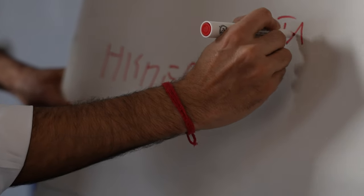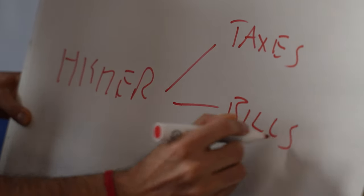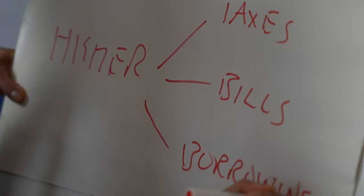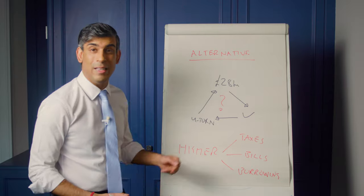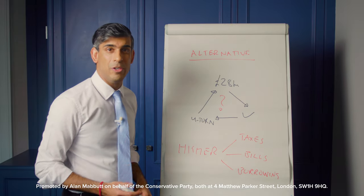It means higher taxes, higher energy bills for you, and higher borrowing, leaving your kids to pick up the tab. And that means a worse future for you and your family.